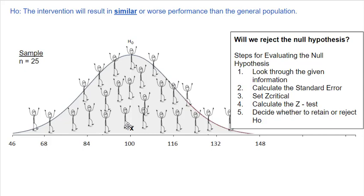Here are the steps we go through in deciding whether or not to reject the null hypothesis. Number one, look for the given information typically provided by your instructor. Number two, calculate the standard error. Three, set the Z critical. Four, calculate the Z test. Five, decide whether to retain or reject the null hypothesis.